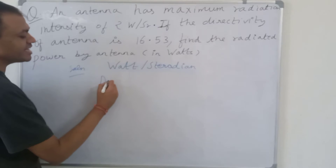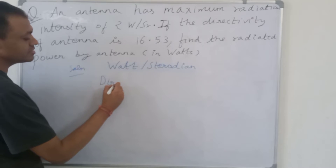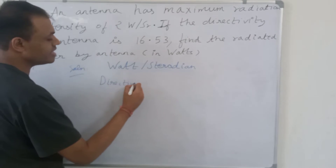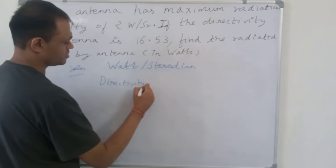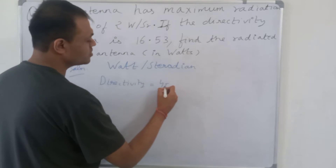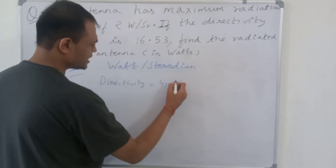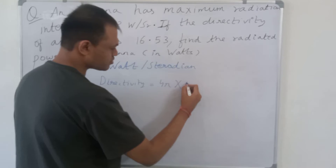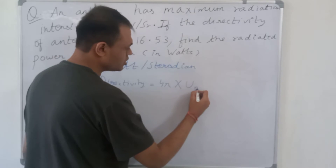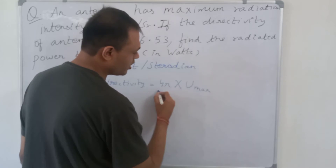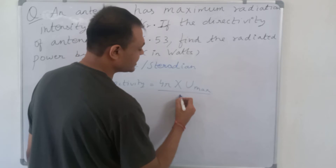The formula for directivity is: directivity is equal to 4 pi into maximum radiation intensity, denoted by U_max, upon power radiated.